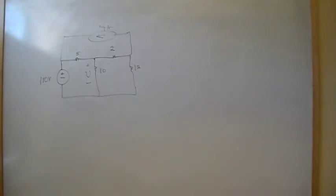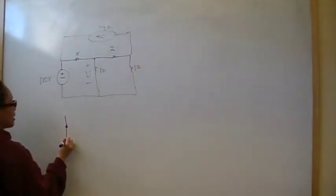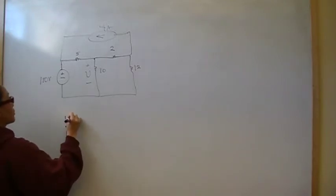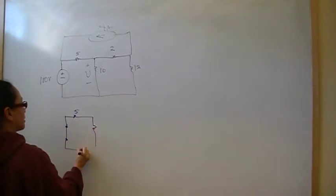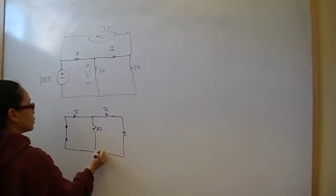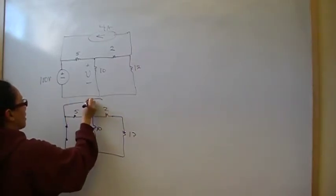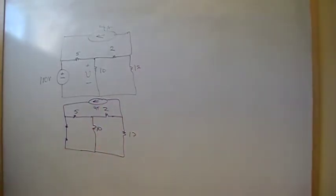So first we're going to consider what effect the 4 amp source has and to do that we're going to disable the 110 source. So we're going to disable that by shorting out the voltage source. So we've got 5 here, we've got 10 here, 2 here, 12 here. And we have 4 amps there. So we're just going to short out the 110 independent voltage source.